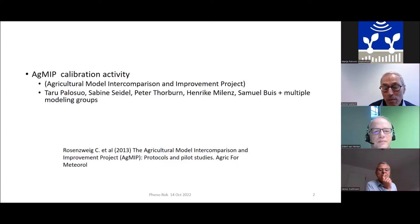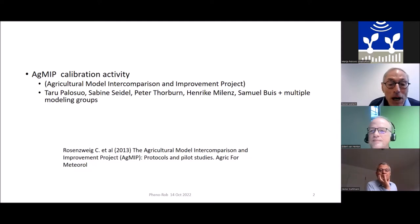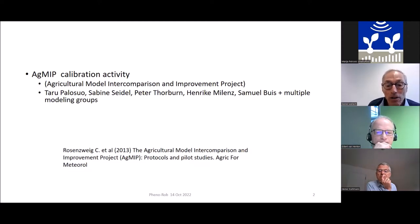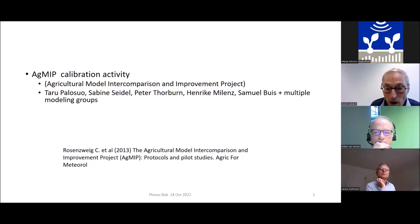A lot of what I'll be presenting is based on a group called the AgMIP calibration activity. AgMIP, for those who don't know it, is an international project that was initiated, I think, in 2011. It has very seriously changed the whole way of doing crop modeling by encouraging a lot more collaboration between crop modelers.